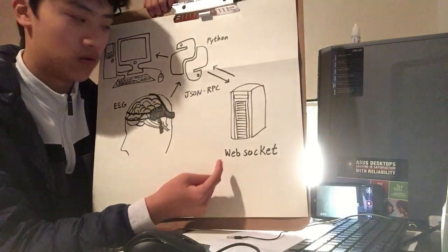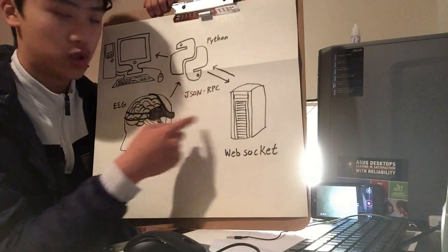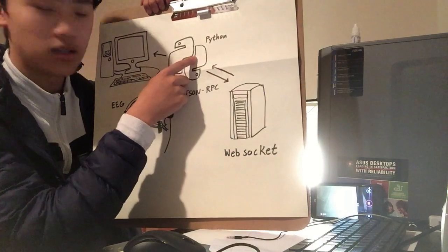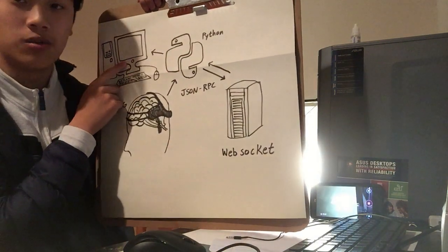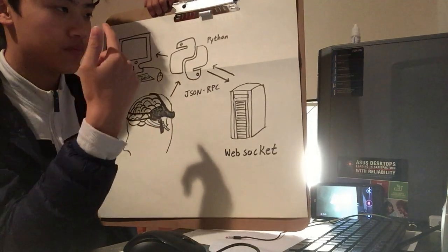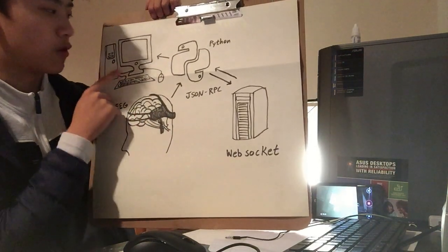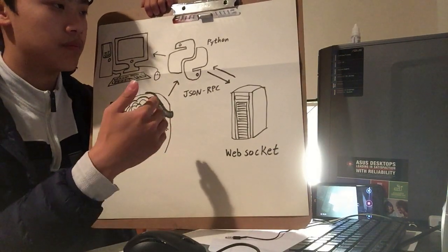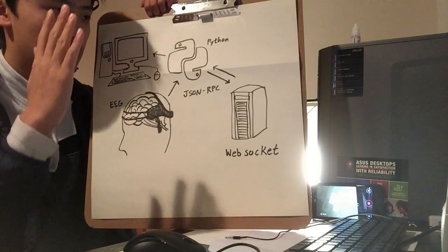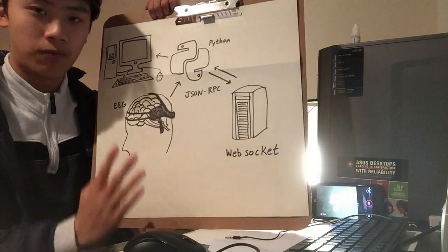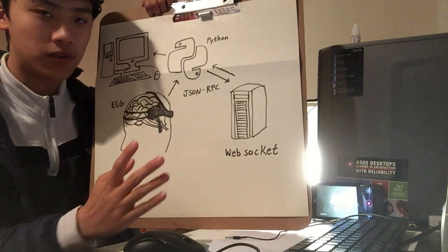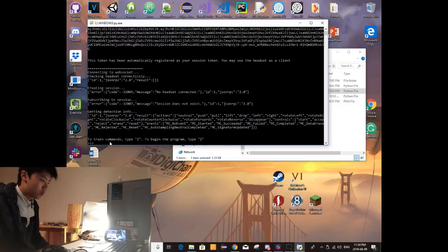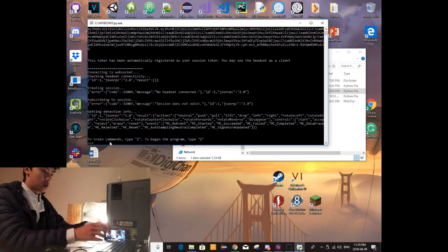The WebSocket sends back a response — the command corresponding to the data — back to the Python program, which then sends it to my monitor and performs an action based on that command. In this program, the command is one of five: the four directional commands — up, down, left, and right — and also a click command, since it's a cursor navigation program that moves the cursor based on the command.